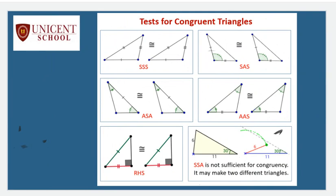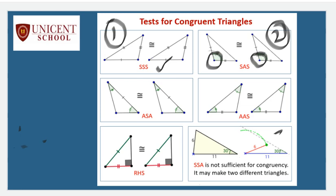We have basically five congruency rules. The first is SSS congruency rule - whenever the three sides of two triangles have the same measurements, we say the two triangles are congruent based on SSS congruency criteria, and we need not compare the angles. If instead of three sides we have two sides and one included angle given, we can say the two triangles are congruent based on SAS congruency criteria.